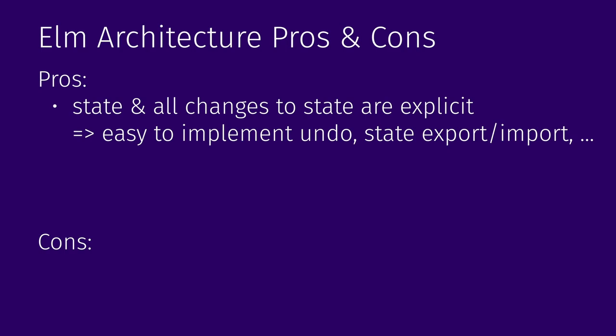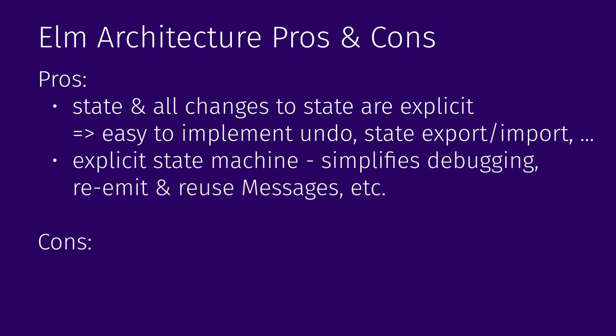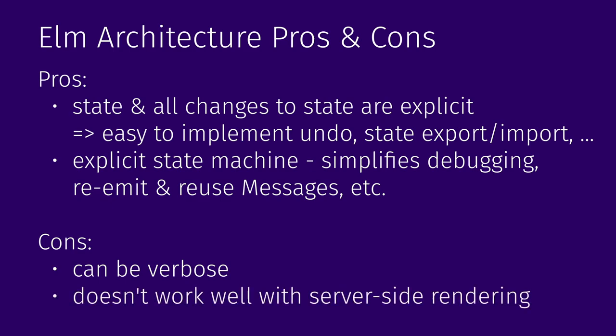Another cool thing about the Elm architecture is that it explicitly models a state machine. Any UI can be modeled as a state machine: you have some application state, the user does an action, and the state changes accordingly. In Elm architecture, you have specific state, specific messages, and you explicitly write what will happen to state on every message. There are also cons: it can be quite verbose because you need to write code for each message and model every piece of state explicitly. Also, struct components are not recommended when you want server-side rendering.